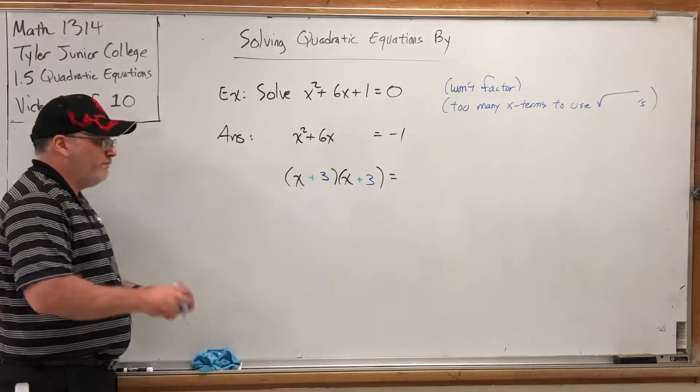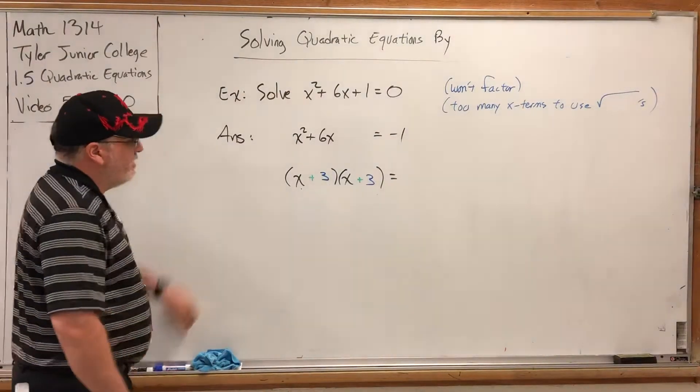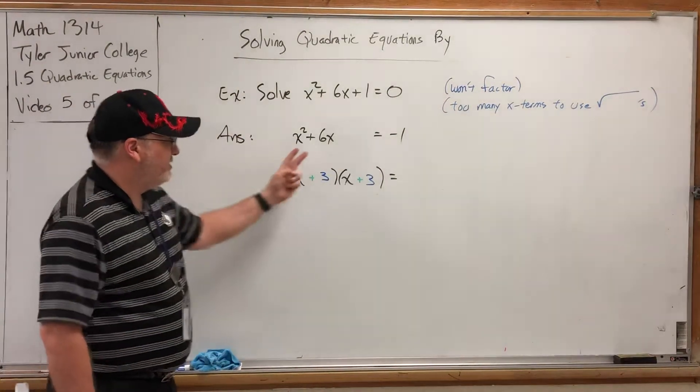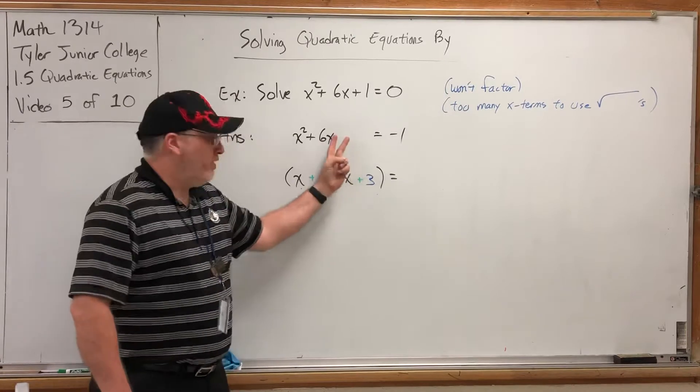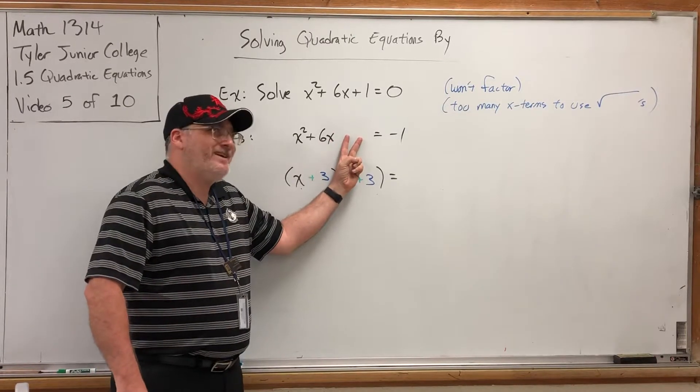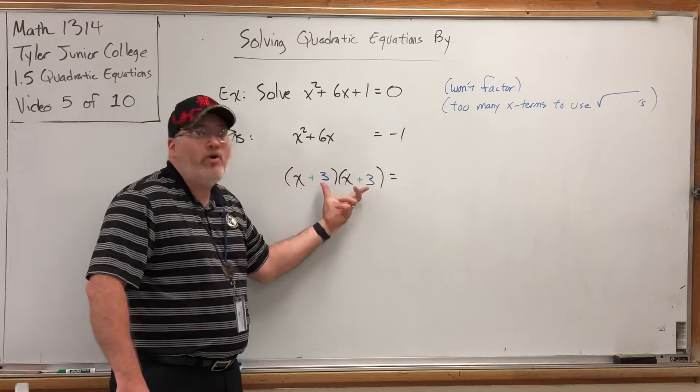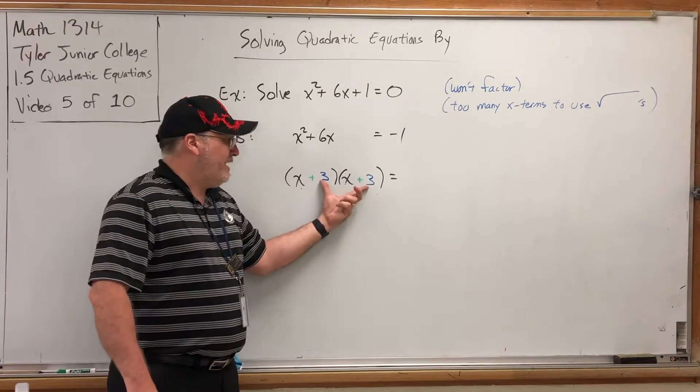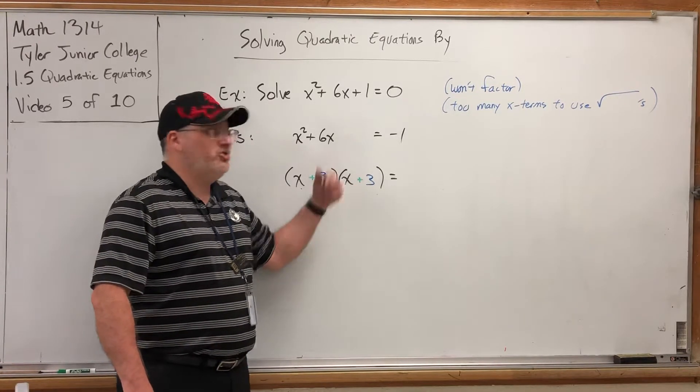Because this will not factor into that unless it has the correct number here. Now, what is that correct number? Well, that's like asking what's the last part of this FOIL problem. Well, the last part of this FOIL problem is 3 times 3, which is 9.